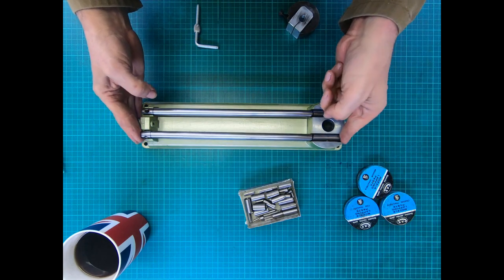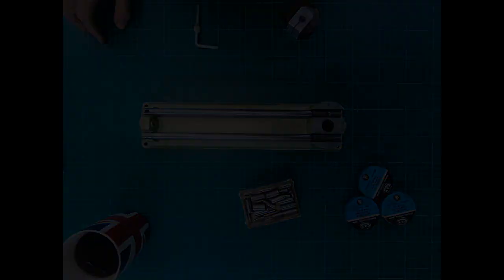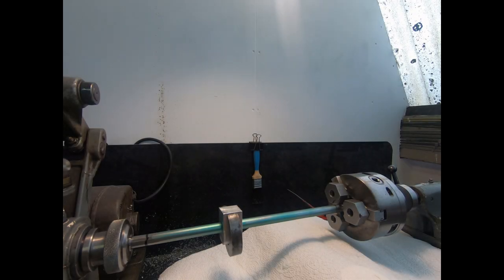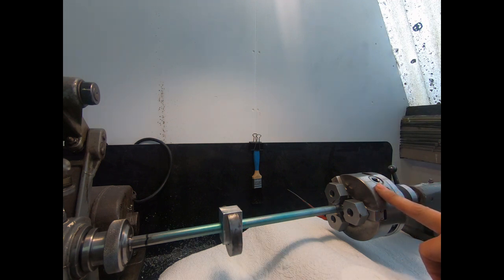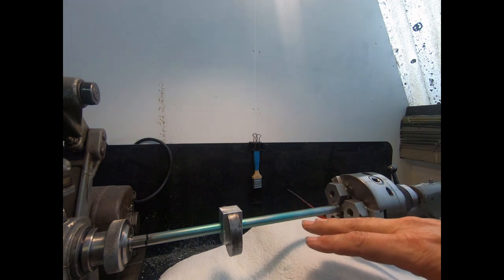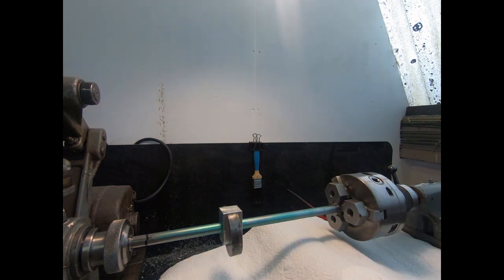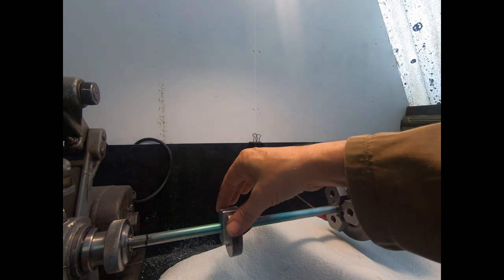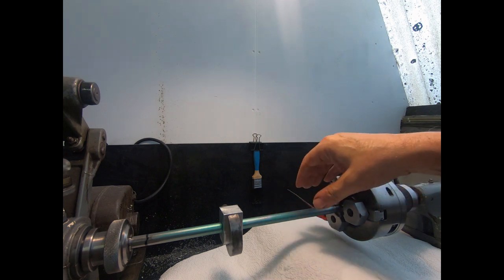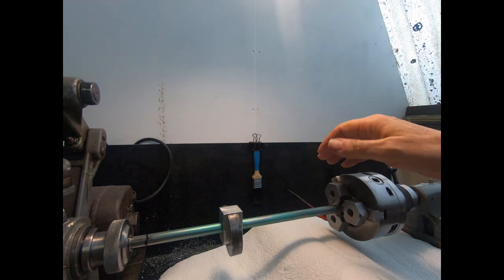Hi everyone, so we're all set up on the lathe now. I've got a collet in the headstock for the lapping block, and we've got a tail stock chuck fitted. I've taken the compound slide off and I've just covered the ways to ensure that I don't get anything on there.